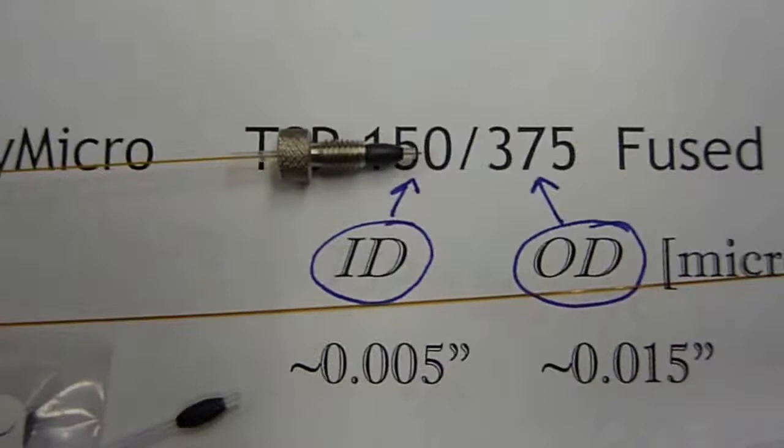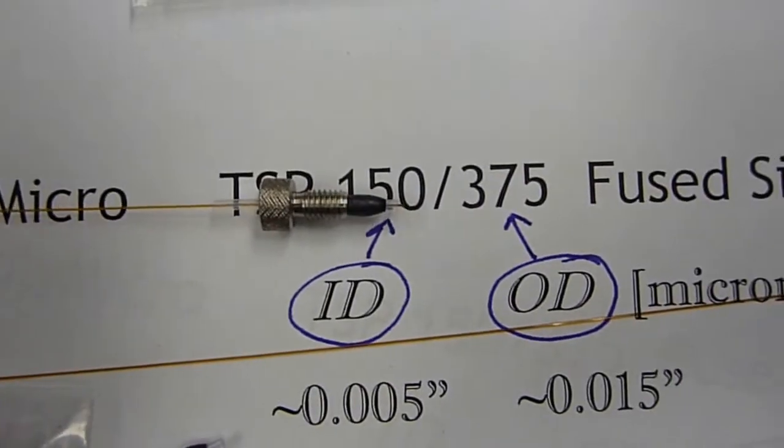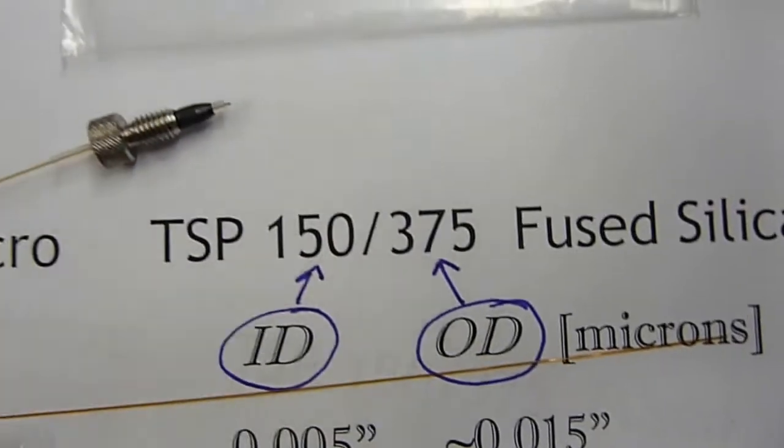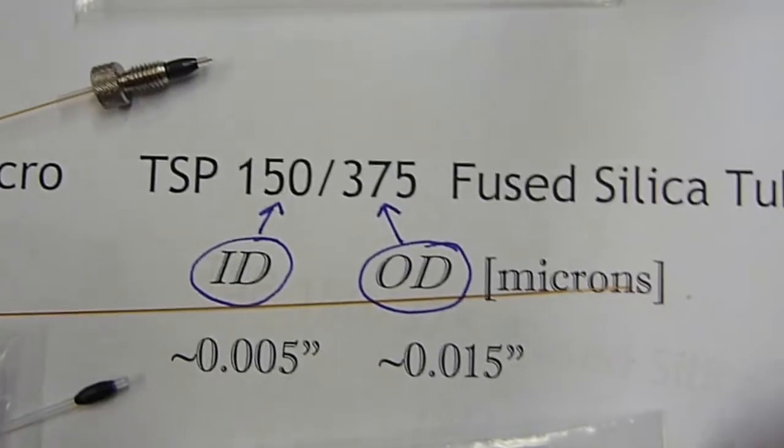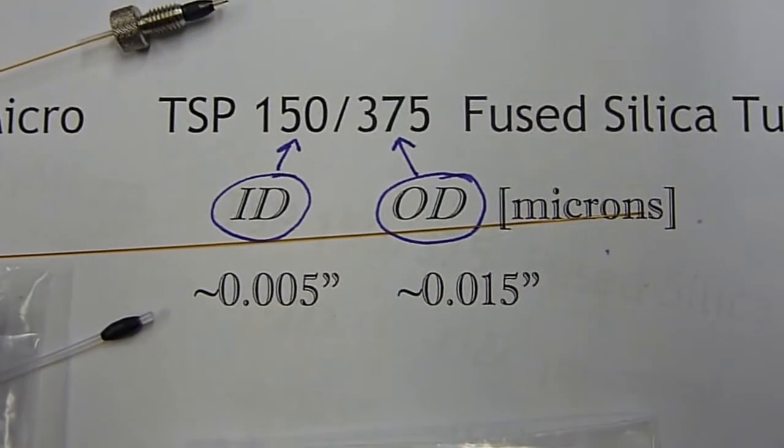So fused silica tubing is in poly micro. TSP 150/350 fused silica tubing. 10 meters in 2017 costs about $180.